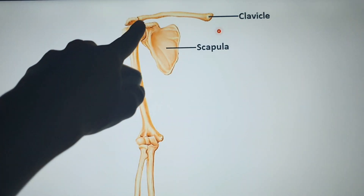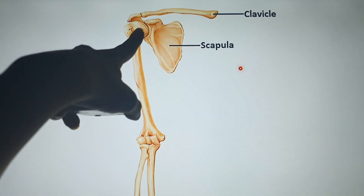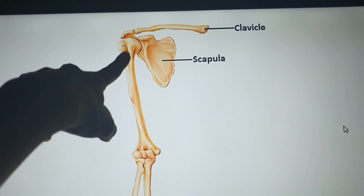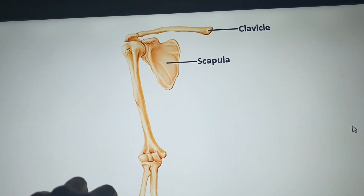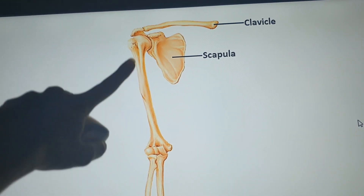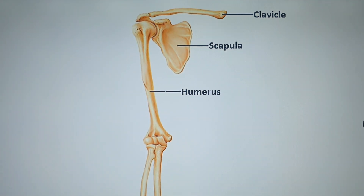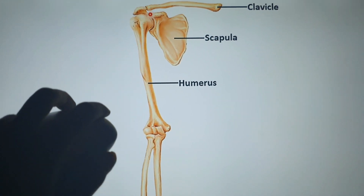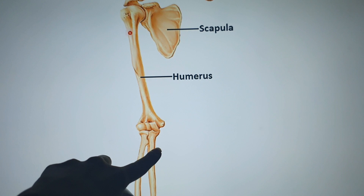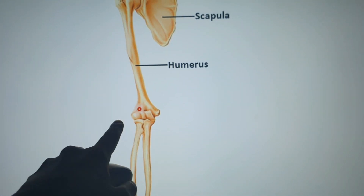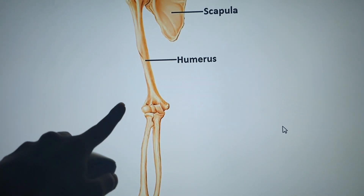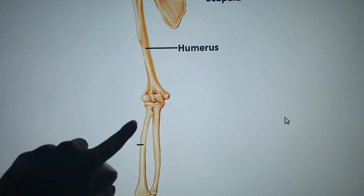Now for the humerus: we have two tuberosities, an anatomical neck, a surgical neck, the head, the shaft, the upper end, and the lateral end. The upper end articulates with the glenoid cavity of the scapula. The lateral end articulates with the head of the radius and also the ulna, forming the elbow joint.